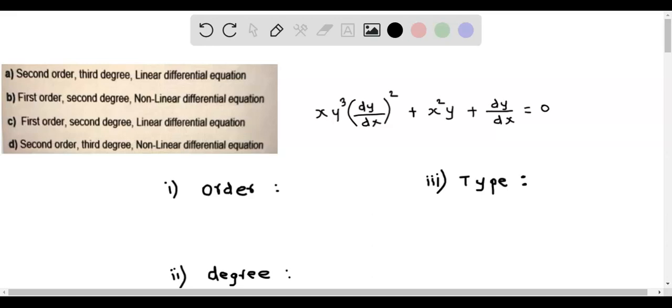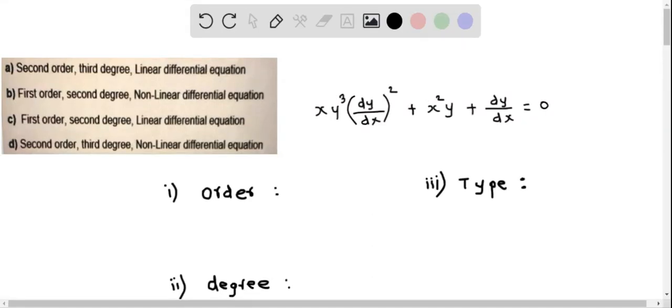Let's determine the nature of this given differential equation. We have x y cubed times dy by dx quantity squared, plus x squared y plus dy by dx, equals 0.